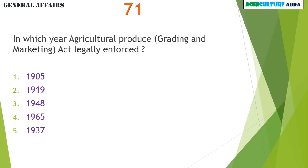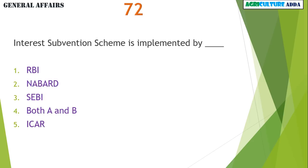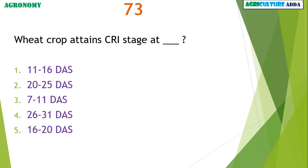In which year was the Agricultural Produce, Grading and Marketing Act legally enforced? 1937. Interest subvention scheme is implemented by RBI and NABARD. Wheat crop attains CRI stage at 11 to 16 days after sowing.